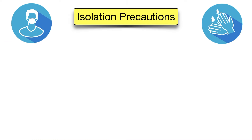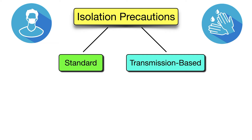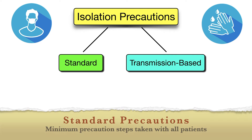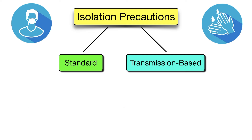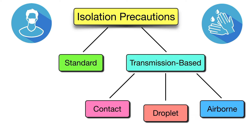When we talk about isolation precautions, there are two main categories. We have our standard precautions and then we have transmission-based precautions. Standard precautions are the basic precautions used for all patients, and transmission-based precautions are extra steps to follow in addition to the standard precautions in order to prevent the spread of certain infections.